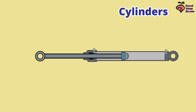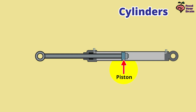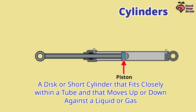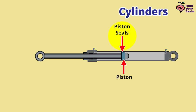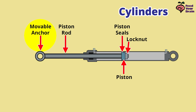Here is the inside of a hydraulic cylinder. The basic movement is like this. This part is the piston — a disc or short cylinder that fits closely within a tube and moves up or down against a liquid or gas. Inside the tube or cylinder is pressurized hydraulic fluid. The piston needs to be sealed against the inner wall of the cylinder with a piston seal so liquid will not escape past it. Moving the piston back and forth is the piston rod. Keeping the piston firmly attached to the piston rod is the lock nut. Since the piston and piston rod are moving, the anchor attached to the equipment they move is called the movable anchor. The space between the piston rod and cylinder housing is sealed by the piston rod seal.